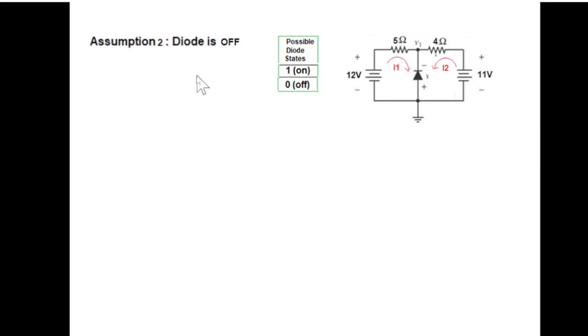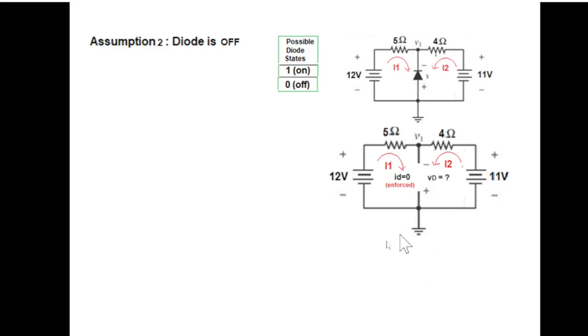So we had done the short circuit case. Now we'll go for zero or diode off or reverse bias condition. So diode is off or reverse biased, so we open the circuit.